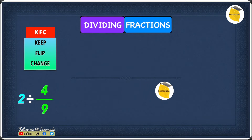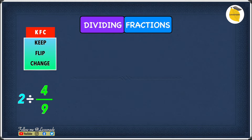Now let's see how to divide fractions. The example we have is 2 divided by 4 over 9. As you can see, 2 is a whole number and 4/9 is a fraction. Because we have a whole number, we need to change it into a fraction. To do that, write the whole number as the numerator and write 1 as the denominator — so 2 over 1. Once we have the whole number as a fraction, we can apply KFC to find our answer.